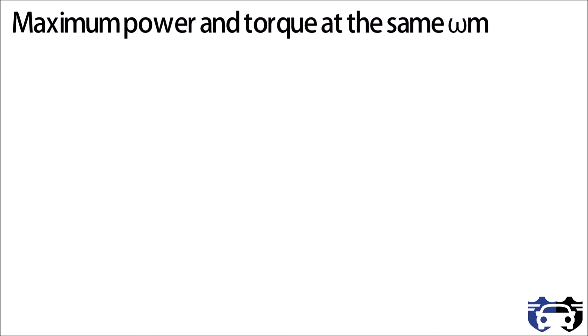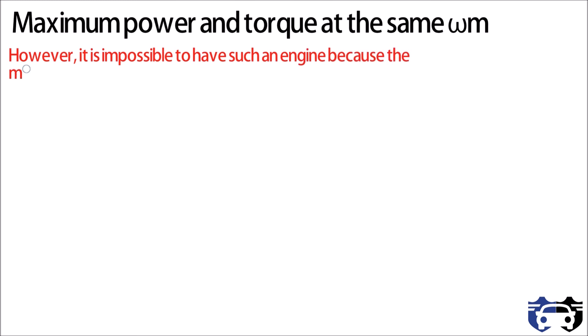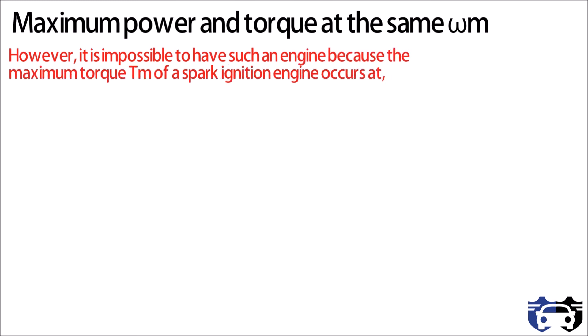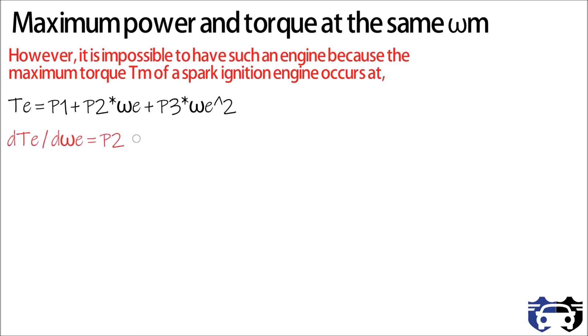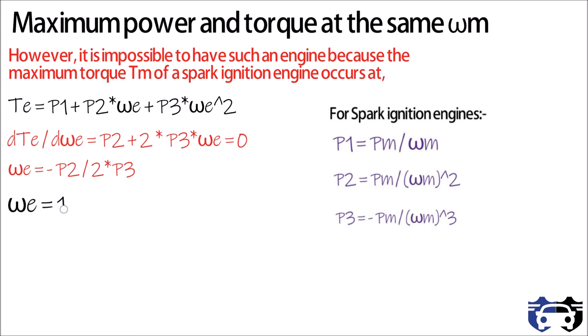Now let's consider the case of maximum power and maximum torque occurring at the same angular velocity omega m — however, it is impossible to have such an engine. The maximum torque tm of a spark ignition engine can be found by differentiation. Starting from te equals p1 plus p2 times omega e plus p3 times omega e squared, differentiating with respect to omega e and setting it to zero gives p2 plus 2 times p3 times omega e equals zero, so omega e equals minus p2 divided by 2 times p3.